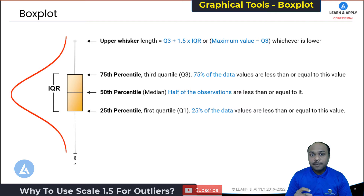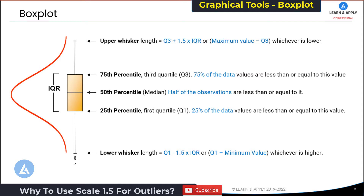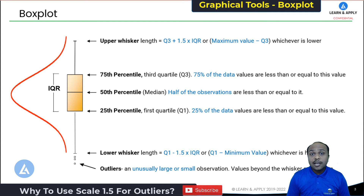Now, how do we calculate the length of these whiskers? To calculate the upper whisker length, we use the formula: Q3 plus 1.5 times IQR, or the maximum value minus Q3, whichever is lower. To identify the lower whisker length, we use the formula: Q1 minus 1.5 times IQR, or Q1 minus the minimum value, whichever is higher. The next question is: why are we using 1.5? That is the topic we are going to discuss today. Points going beyond the whisker length are called outliers — an outlier is an unusually large or small observation.